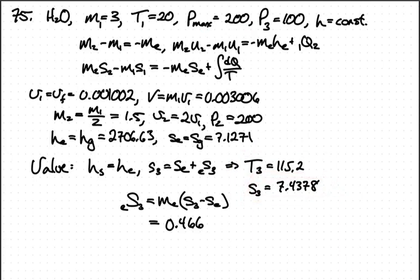We can figure out what the entropy is in the third state. We get this from knowing the enthalpy, and because we know the pressure, we can get the entropy. Now we can calculate that the total entropy generated is the mass of what exited times the difference between the specific entropy coming into the valve and leaving the valve. That turns out to be 0.466 kilojoules per Kelvin.